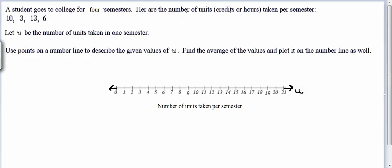And they define the variable letter name U to represent the number of units taken in any given one semester. So we're asked now to draw a number line. So if you're drawing this by hand, a couple of important things to keep in mind.